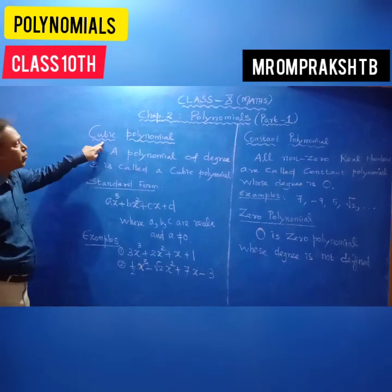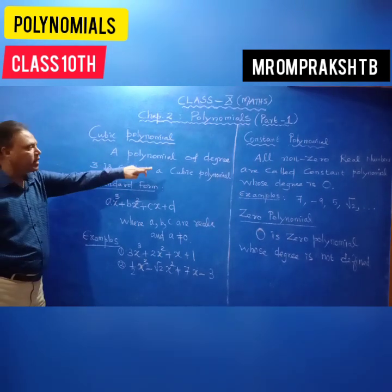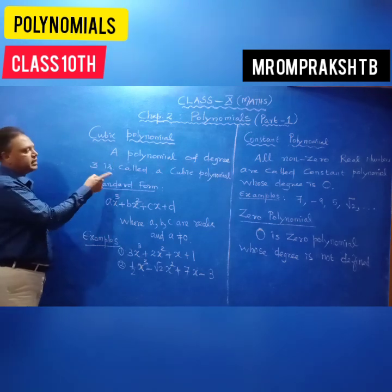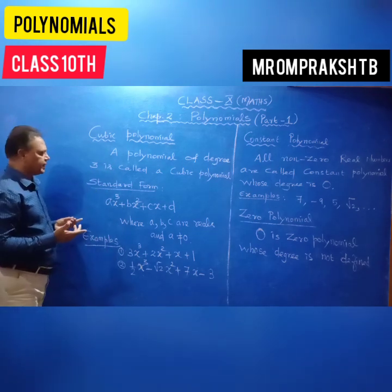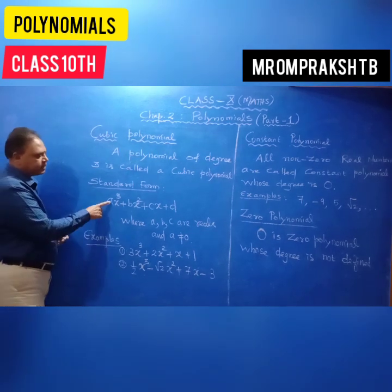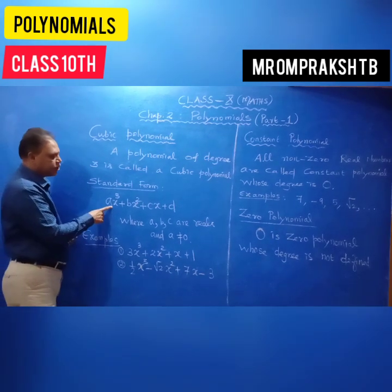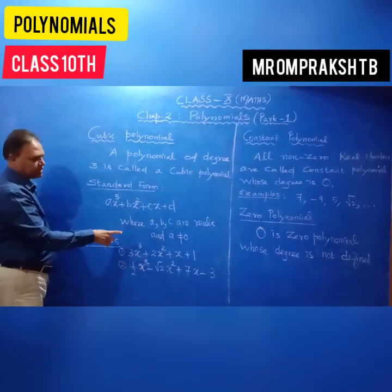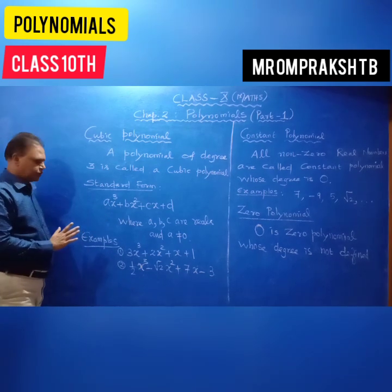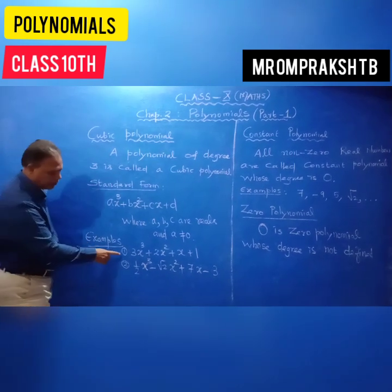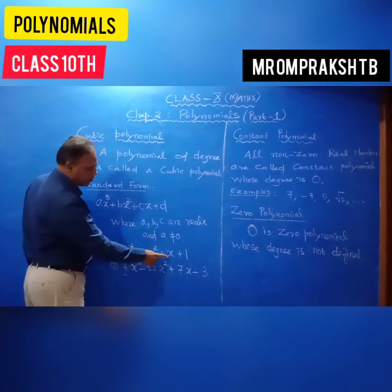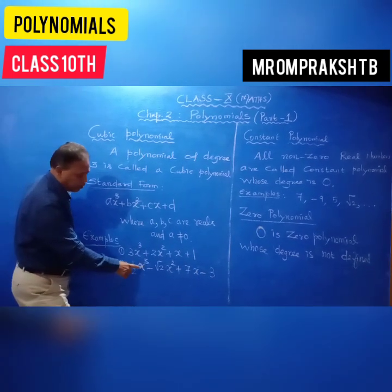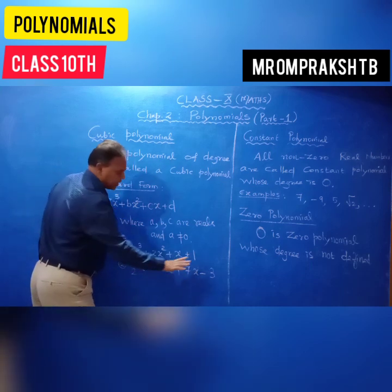A cubic polynomial is a polynomial of degree 3. Its standard form is ax cubed plus bx squared plus cx plus d, where a, b, c, d are real numbers and a is not equal to 0. Examples: 3x cubed plus 2x squared plus x plus 1, and 1/2 x cubed minus root 2 x squared plus 7x minus 3.